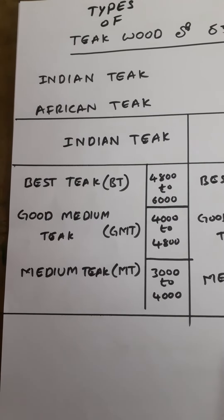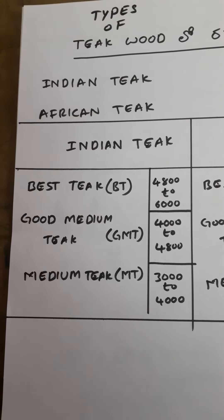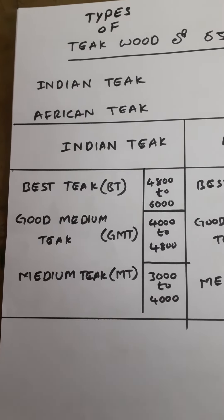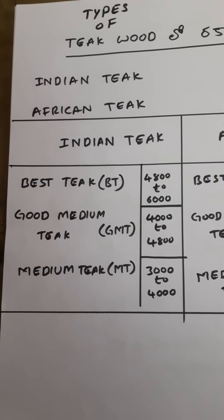The costing for Indian teak: Best Teak (BT) is about ₹4,800 to ₹6,000 per cubic feet (cft). Good Medium Teak (GMT) costs about ₹4,000 to ₹4,800 per cft. Medium Teak (MT) is available from ₹3,000 to ₹4,000 per cft. These are general prices — they vary from shop to shop and area to area. For African teak, it is comparatively cheaper: BT is about ₹1,900 to ₹2,000 per cft, GMT is about ₹1,800 per cft, and MT ranges from ₹1,500 to ₹1,700 per cft.